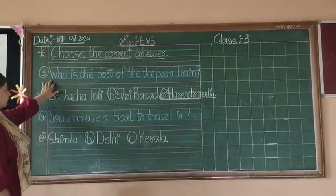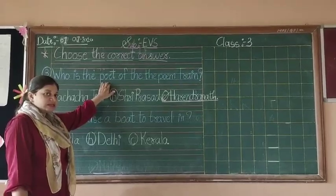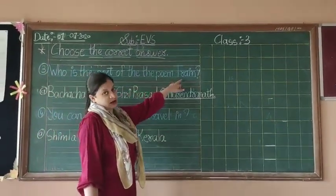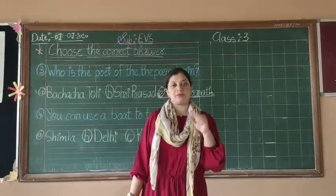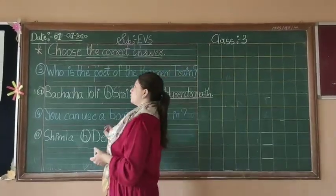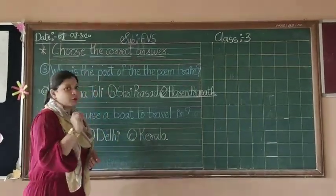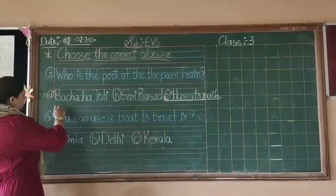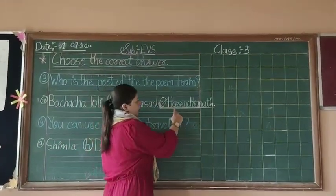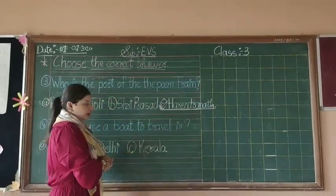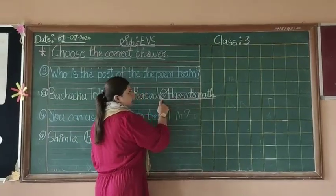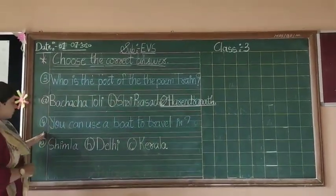Now see what is number three: Who is the poet? Poet means who wrote this poem. The poem is 'Train' — we read it: chuk chuk chuk chuk, all the stations stop one by one. So who wrote that poem? The correct option is Harindra Naana. You can underline it or do a tick mark.